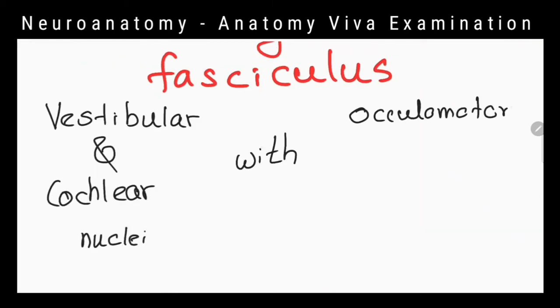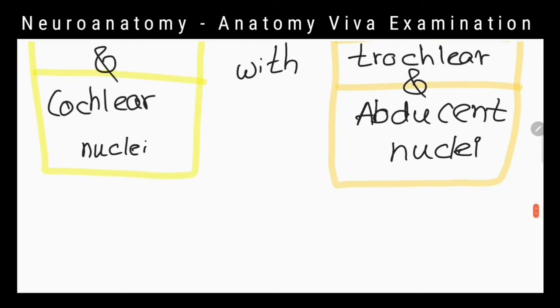What are the structures connected via medial longitudinal fasciculus? Vestibular and cochlear nuclei with oculomotor, trochlear and abducent nuclei. What is the importance of that connection? It allows to coordinate conjugate movements of eyes associated with head and neck movements.